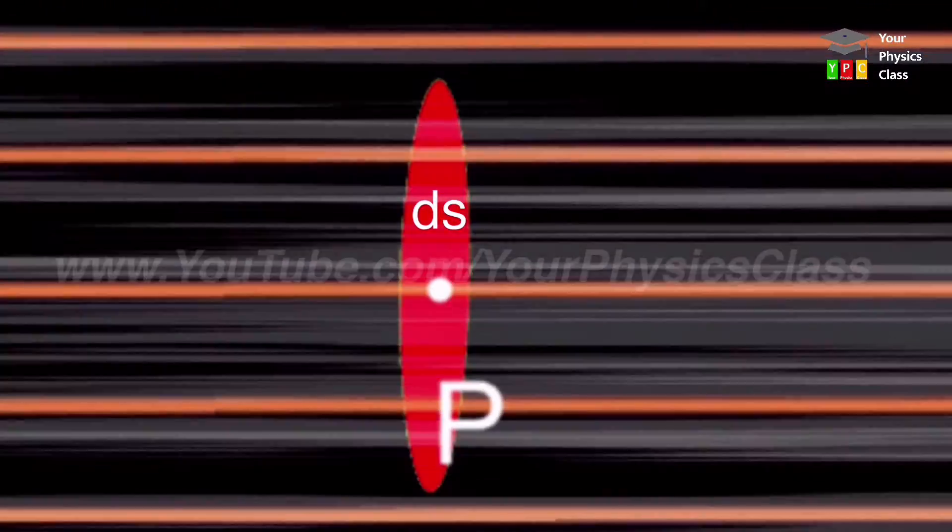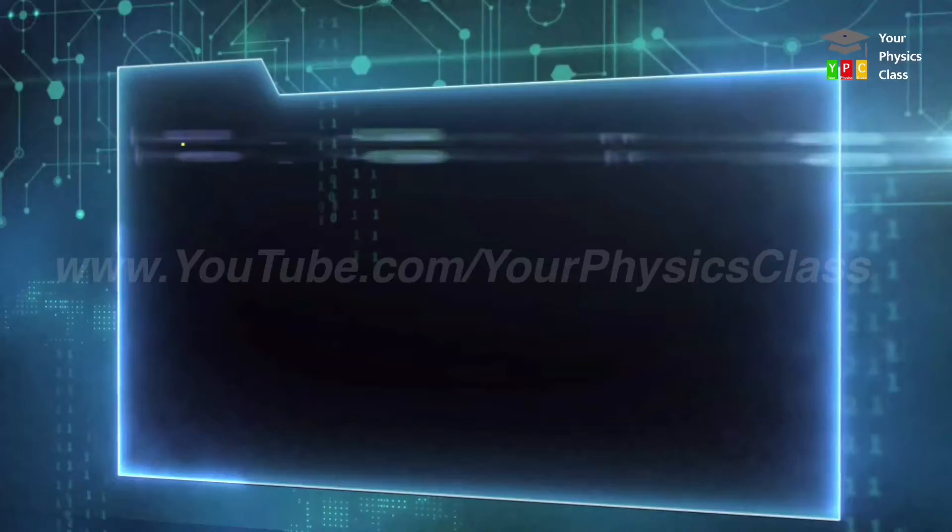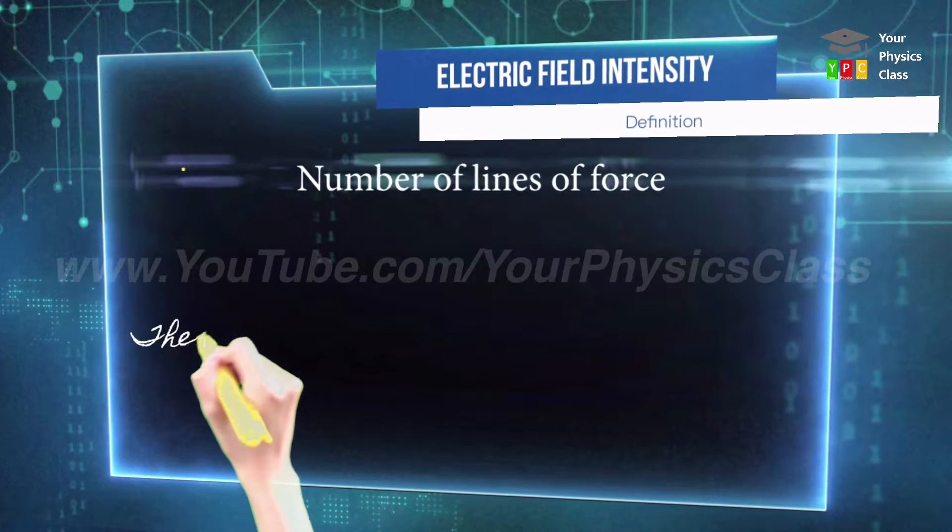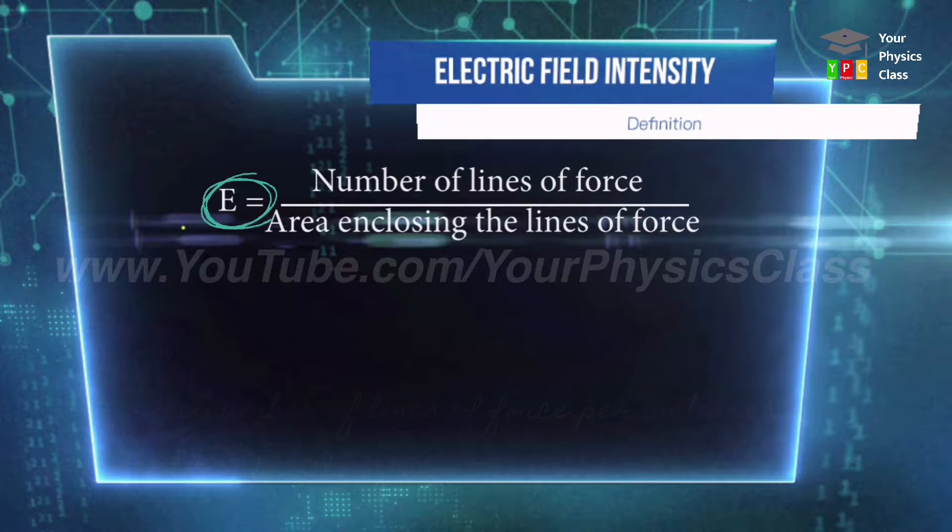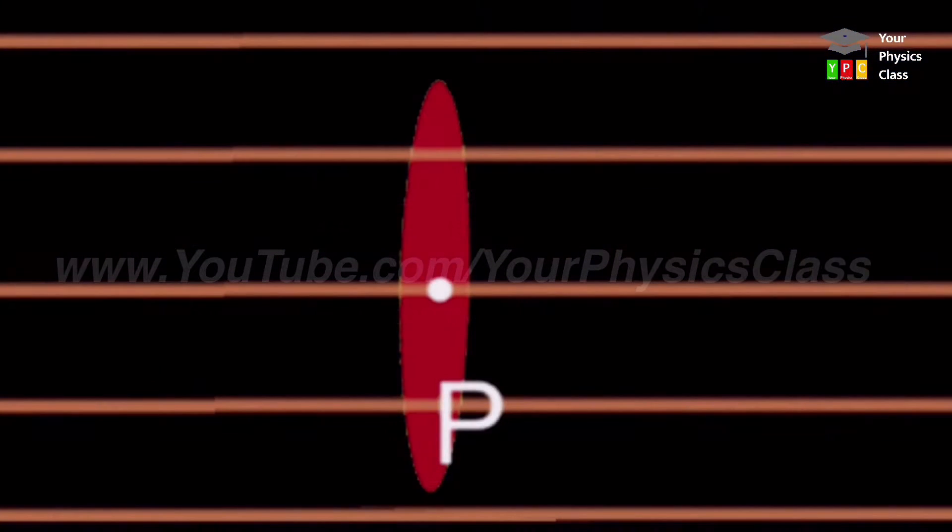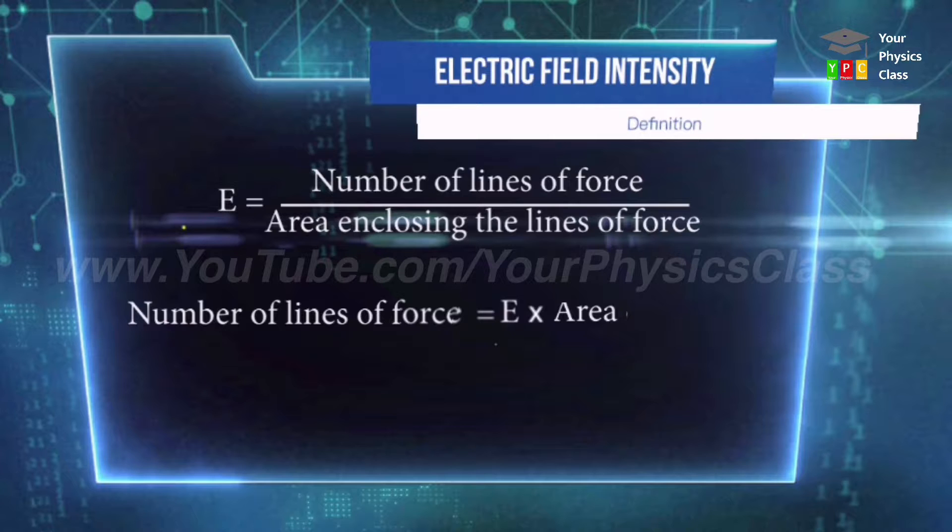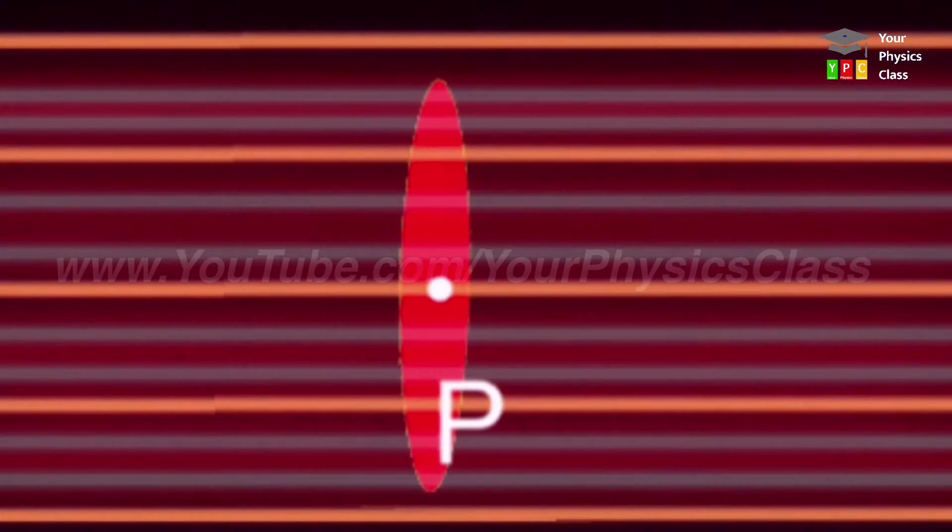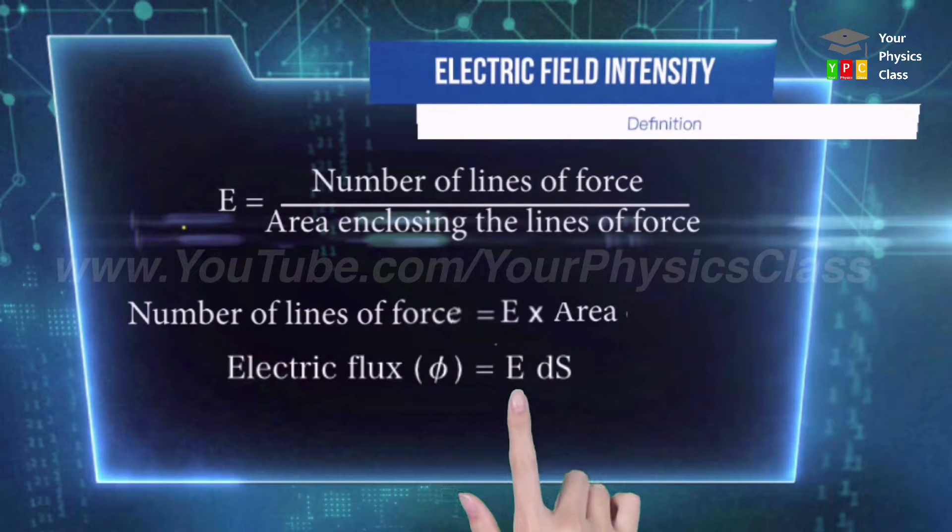Number of lines passing normally through this surface area dS is nothing but electric flux. Now how to measure number of lines? For this we use the definition of electric field intensity: the number of lines of force per unit area is intensity of electric field E. So number of lines of force we get is electric field intensity times area. Here, number of lines of force indicates flux at a given point. And if electric field intensity and area vector dS direction are same, then flux will be maximum which equals E into dS as per the definition.